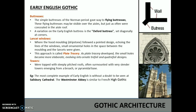Small ornamental holes in the space between the moulding and the lancet were given; this approach is called plate tracery. As plate tracery developed, the small holes became more elaborate, evolving into ornate trefoil and quatrefoil designs. The towers were topped with steeply pitched roofs, often surmounted with very slender towers emerging from a broach or pyramidal base. The most complete example of Early English is without doubt Salisbury Cathedral; Westminster Abbey is similar to French High Gothic.